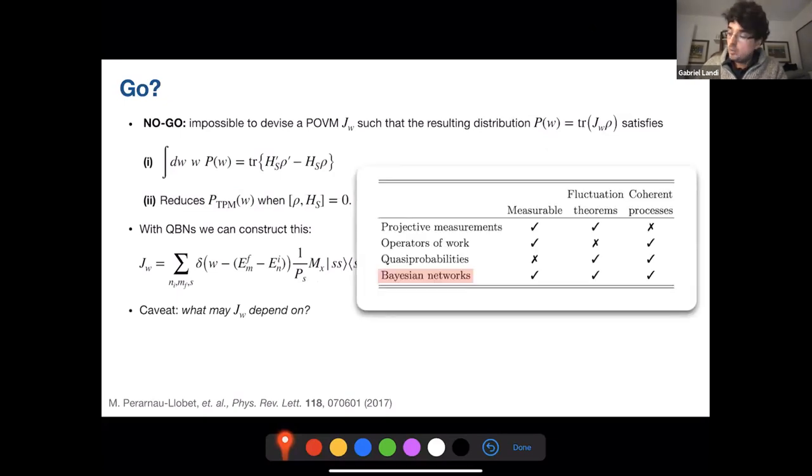There is a caveat, however. So we have this table here, which is an adaptation from the table in this paper, which shows that the Bayesian networks are measurable, satisfy fluctuation theorems, and are available for coherent processes. But there is a caveat, I'm not going to lie, which is that the question of what may this POVM depend on. So if this POVM can depend on the initial state of the system, then this is not true. But if we allow it to depend on the state of the system, then this is true. And our POVM does depend on the state of the system. Interestingly, it only depends on the eigenstates, not the eigenvalues. So I think that's already kind of an upgrade, because in general, you would have to construct some POVM which depends on the entire state.